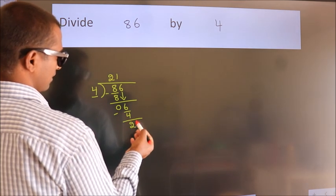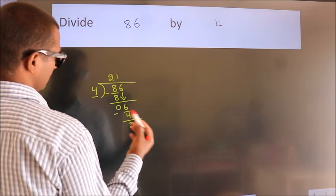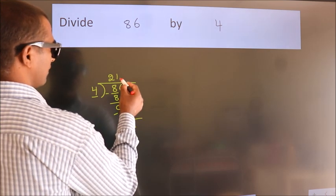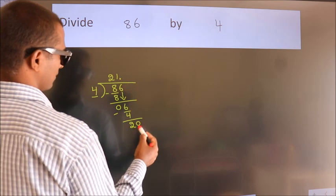After this, no more numbers to bring down. So what we do is we put a dot and take 0. So 20.